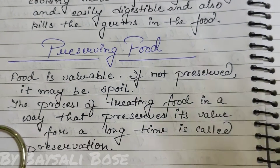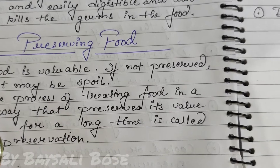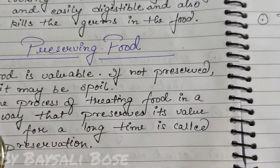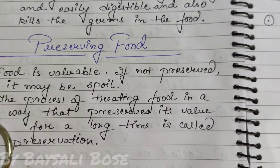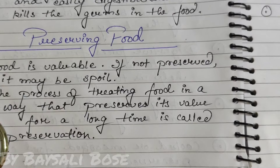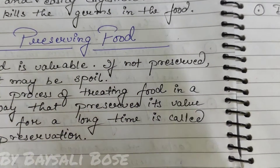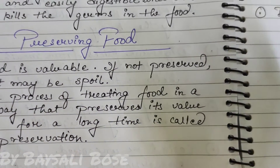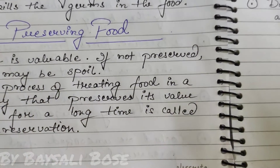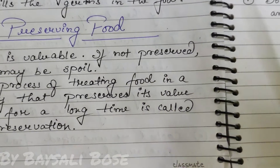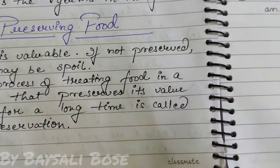Preservation is a process where you can preserve your food by different methods. For example, you add salt and oil to pickles so that they are not destroyed and can be used and eaten throughout the year.